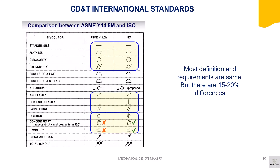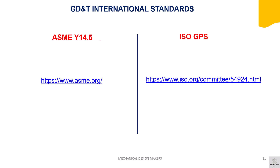As mentioned earlier, concentricity and symmetry tolerances were removed from ASME Y14.5. Other than this, most definitions are the same between the ASME standard and ISO GPS standard, but there are 15–20% differences. This is the official website where you can find further information about ASME Y14.5 and ISO GPS standards.